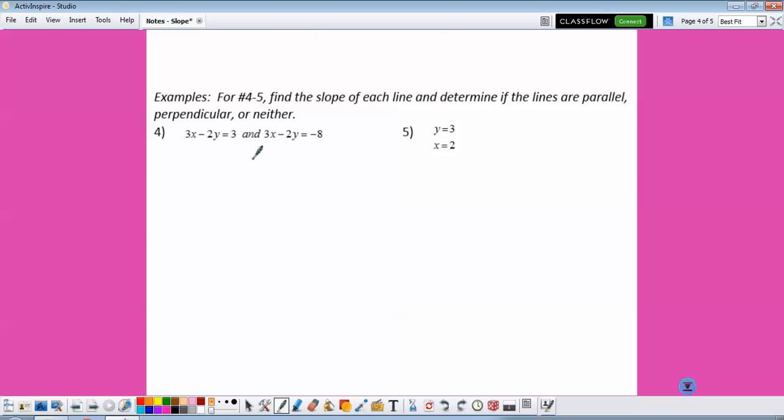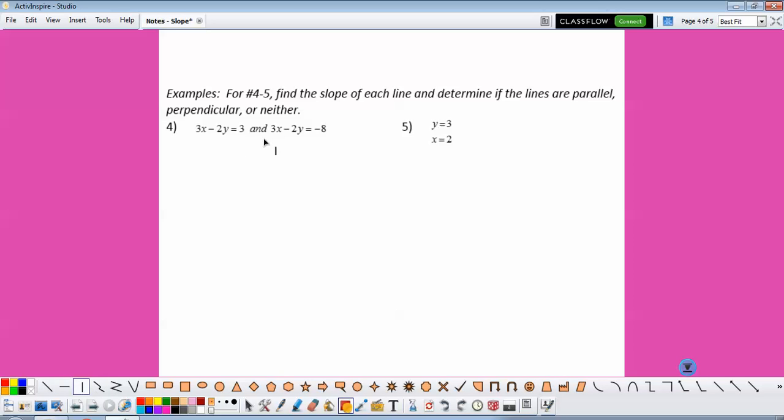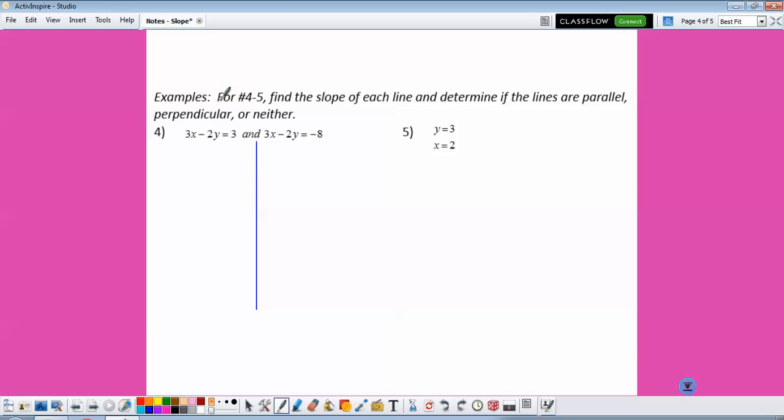What if we're given the equations of the lines? The easiest way to look at the slope when you're given the equation is to write them in Y equals form first. So to get Y by itself here, I'm going to subtract 3X on both sides. So I'll have negative 2Y equals negative 3X plus 3. Divide everything by negative 2. So I would get Y equals 3 halves X minus 3 halves.